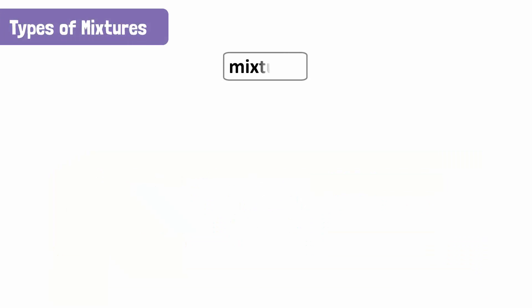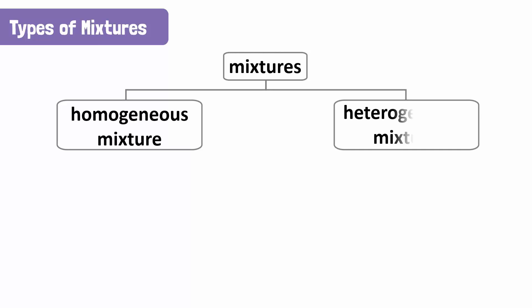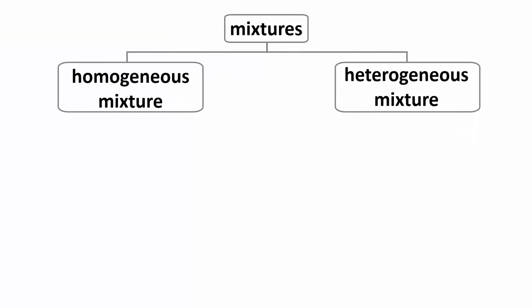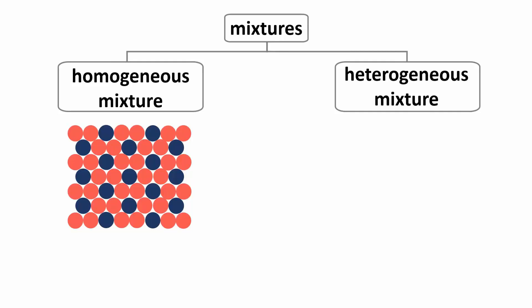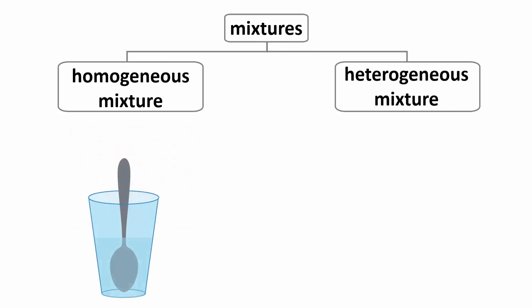Mixtures are of two types, namely, homogeneous mixtures and heterogeneous mixtures. A homogeneous mixture has the same appearance and composition throughout. For example, when you dissolve salt in water, the solution has the same appearance and taste throughout.